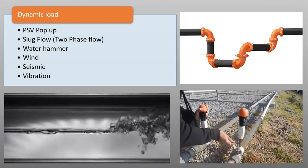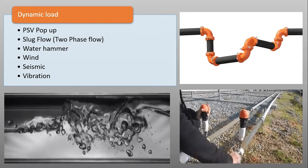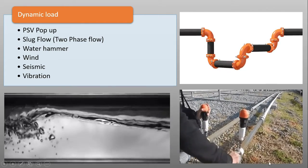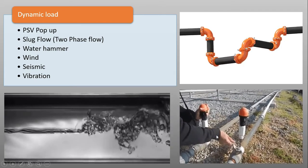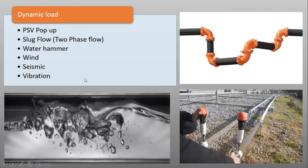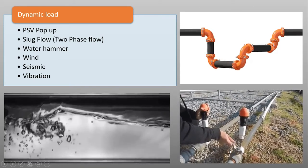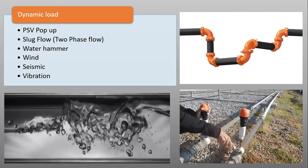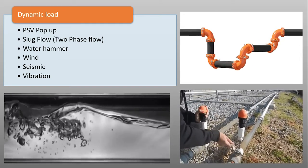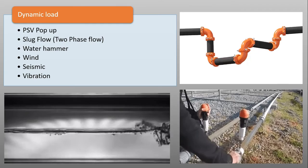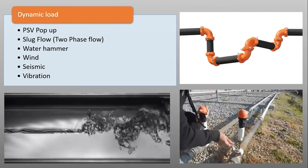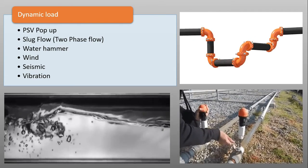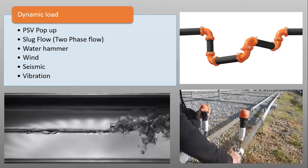Dynamic loads include PSV pop-up, slug flow when there is a two-phase flow — the entire piping is under vibration in that case — and water hammer, caused by the sudden closure and opening of a valve, leading to hydraulic shock. We have to design and position the supports so they are capable of absorbing all these stresses and keeping the system within a safe limit. Wind, seismic, and vibrations are also included.